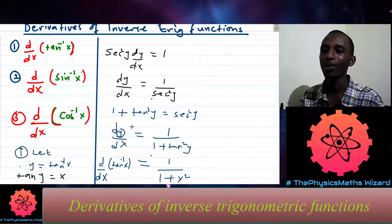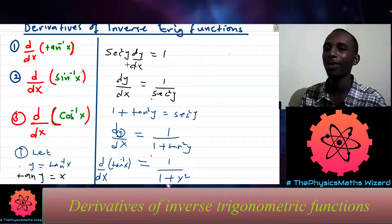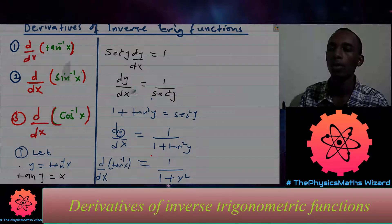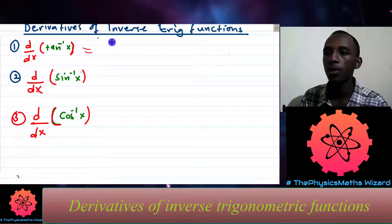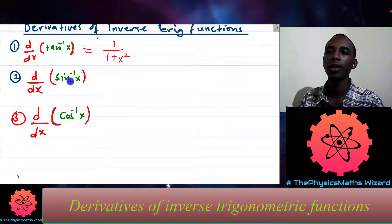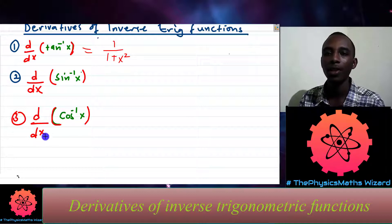So the derivative of arctan of x is 1 divided by 1 plus x squared. Let's go ahead and do the second one.